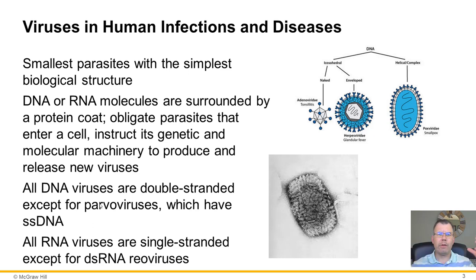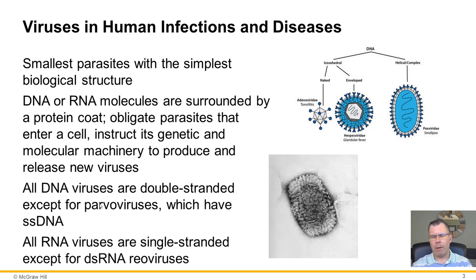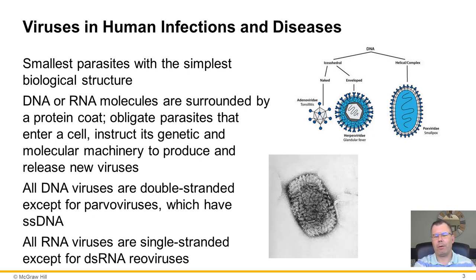RNA viruses stay in the cytoplasm and are all single-stranded, except for the double-stranded RNA reoviruses — those are the ones that always hit cruise ships causing massive diarrhea and sickness. You hear about them in mass infections in schools as well, often caused by norovirus or reoviruses.